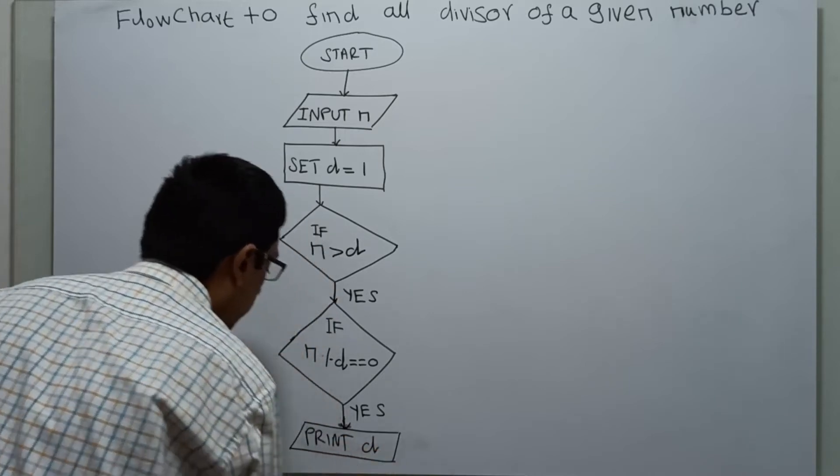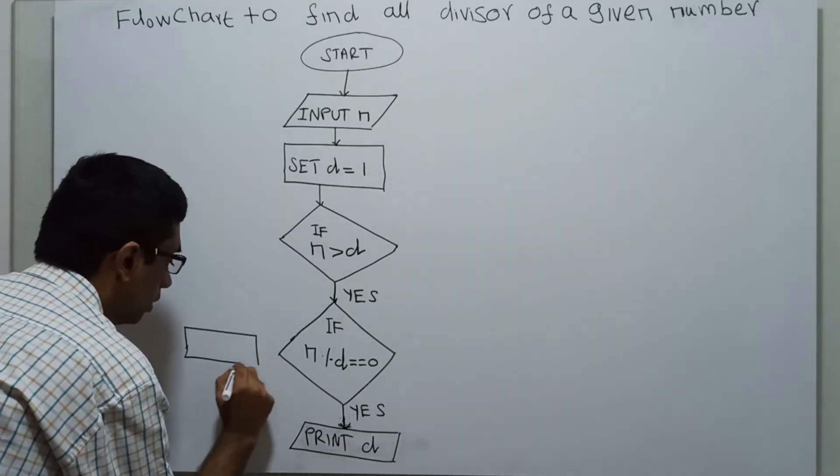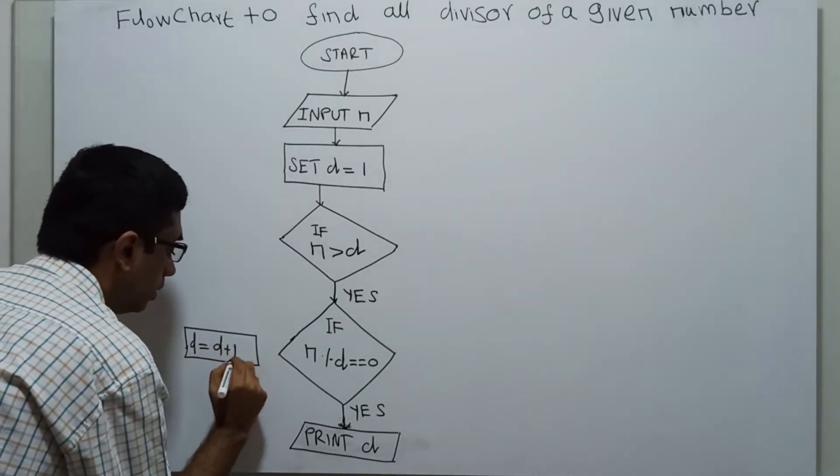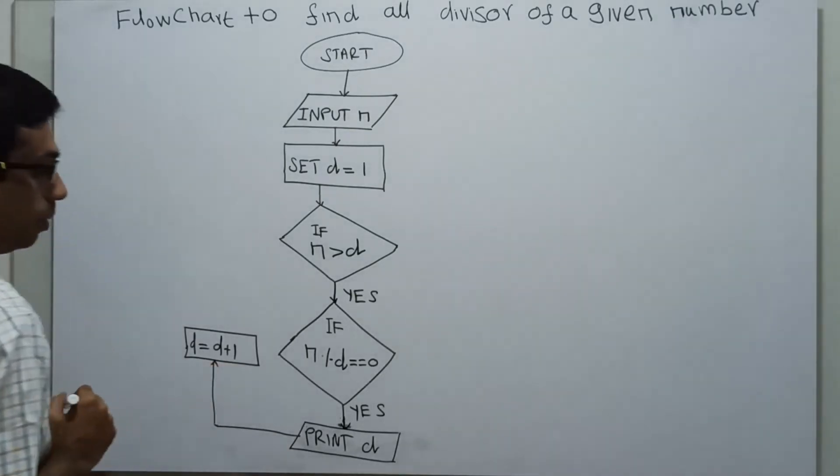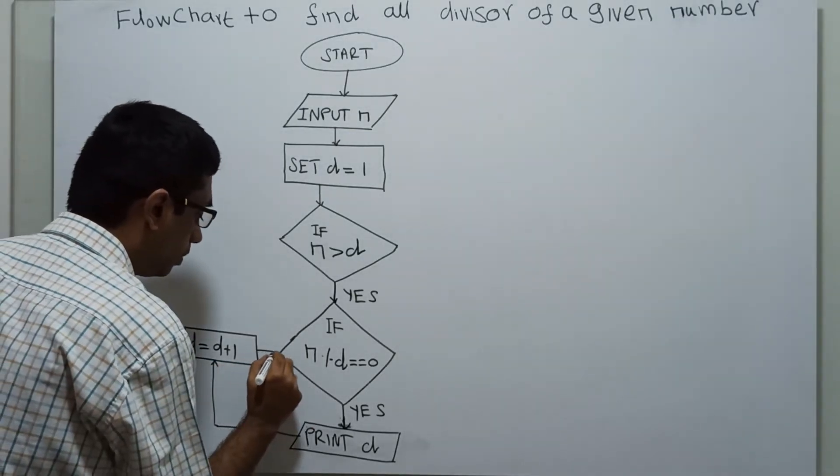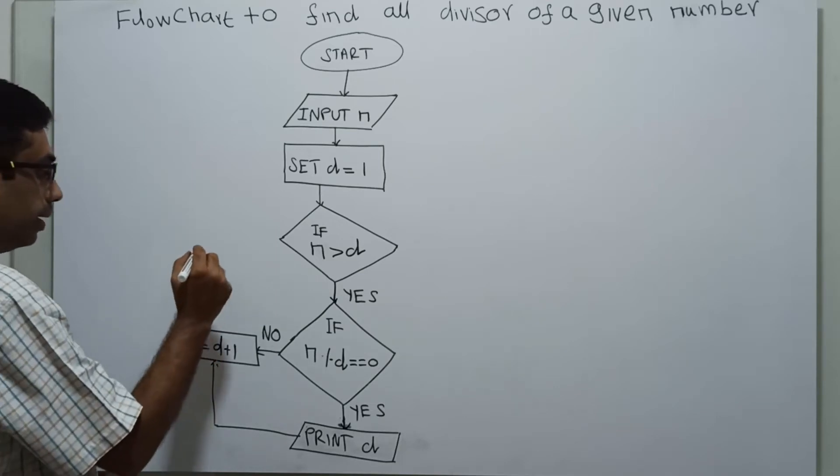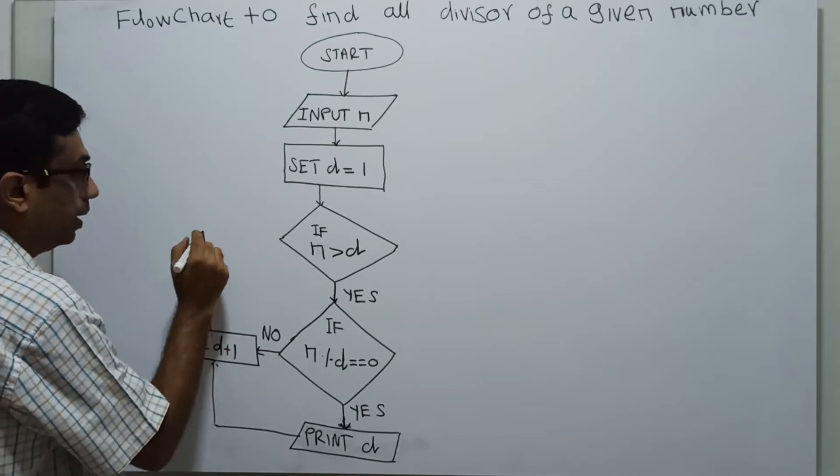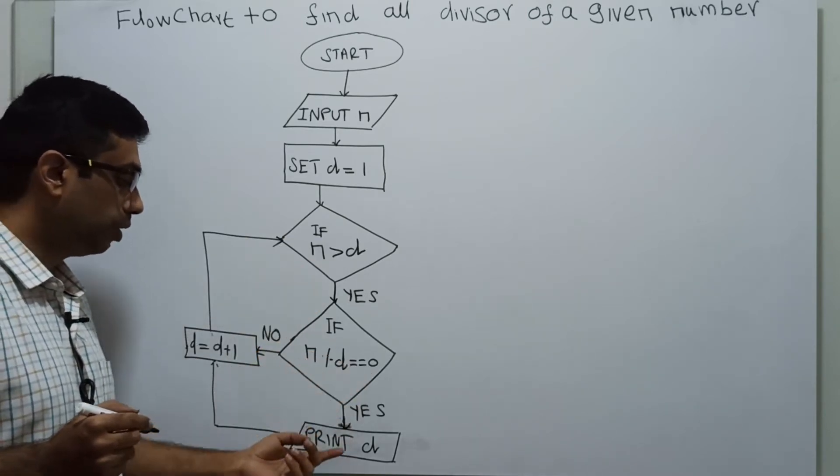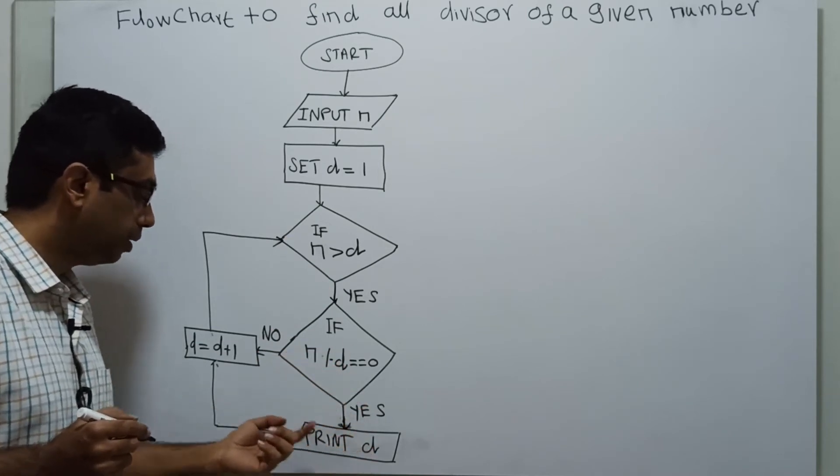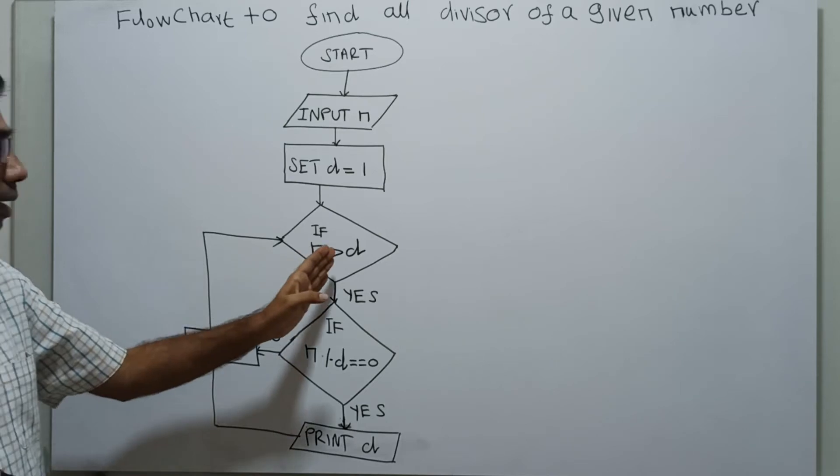Next, I am incrementing d by 1. If it is no, I am not printing d, directly incrementing d by 1. Again I am connecting it back to the first condition n greater than d. If yes, it will check n modulo d equal to 0 and it will print d, and d will get incremented by 1. If n modulo d is not equal to 0, only the value of d will get incremented. Until n greater than d, the loop will go again and again.